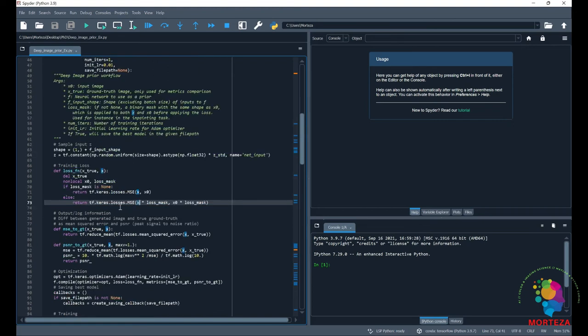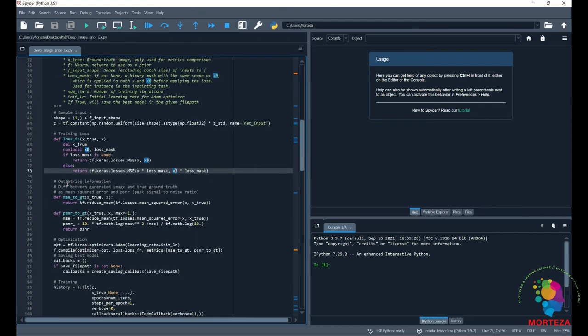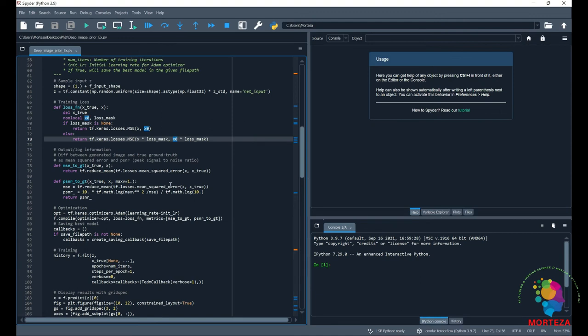And this is loss function, which is calculated between X0 and X. X is the intermediate output from the network. So when the Z is input to the network, in each iteration, there is an output, and X is that output. And the loss function between X and X0, which is the noisy image, is calculated.